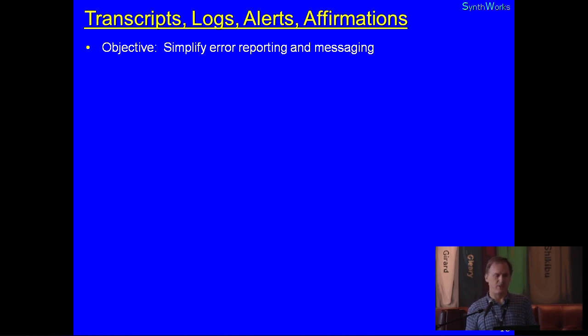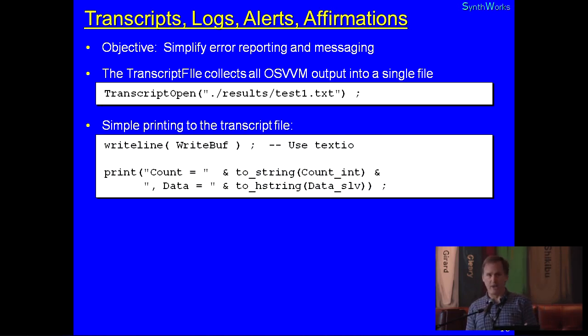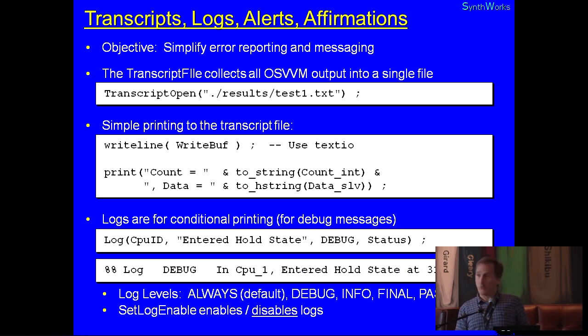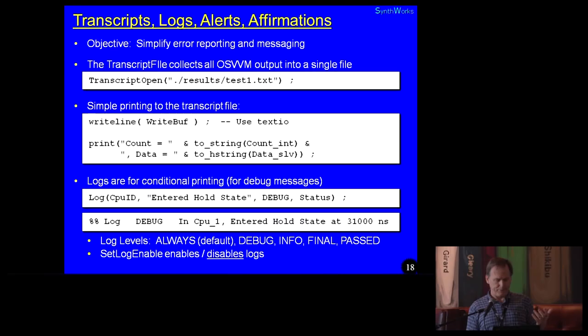Transcripts, logs, and affirmations. This is basically our messaging in VHDL. How do we do reporting and that kind of stuff? So we need to simplify error reporting and messaging. We have a transcript file. We can open it. It basically says, OSVVM output now goes to this file rather than just the output. And we can mirror it and also send it to the output if we want to. And then that means we can use writeline without a file parameter, and we just write to that file, the transcript file. We also can print using strings. I like to print with VHDL 2008 to_string because it gives us something closer to printf, but not there. We also, with respect to printing, we have logs. Logs are about message filtering. We can set different parameters with logs and or levels with logs. And that allows us to turn them on and off. So like a debug message or something like that. It allows us to turn debug messages off. We can have info messages on. We also have pass messages which are for final reporting.